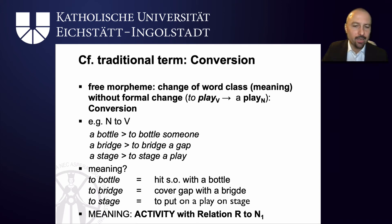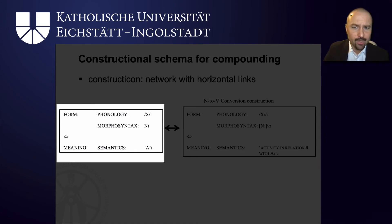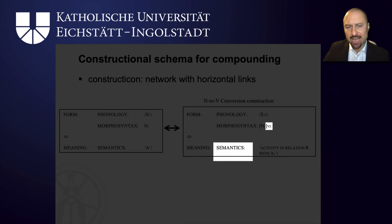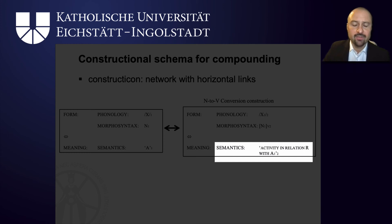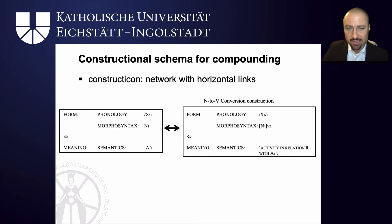The meaning of conversion is therefore 'activity with relation R to N' — our noun, when converted to a verb, is turned into an activity but still has a frame-based encyclopedic relation to the source noun. In the noun-to-verb conversion construction, there is a horizontal link between the noun on the left, which denotes a thing, and a corresponding construction with the same phonology but marked morphosyntactically as a verb, denoting an activity with an encyclopedic frame-based relationship to the original noun. Noun-to-verb conversion is not the only type — verb-to-noun (a cough, a desire, doubts) and even preposition-to-verb (to down a beer) also occur, requiring additional constructions.